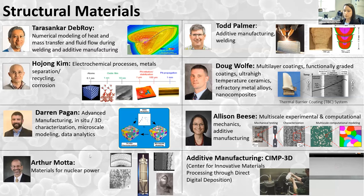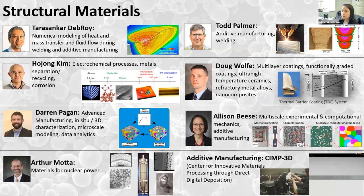Arthur Motta, in the nuclear engineering department, works on materials for nuclear power, doing experiments often in collaboration with Idaho National Labs to understand how nuclear materials evolve during use. Todd Palmer works in additive manufacturing and welding, primarily experimentally, looking at how processing parameters impact microstructure, phases, and properties. Dov Wolf works on high-temperature materials — coatings, ultra-high-temperature ceramics, hypersonics, and refractory metal alloys and composites — doing advanced fabrication and experimental characterization.